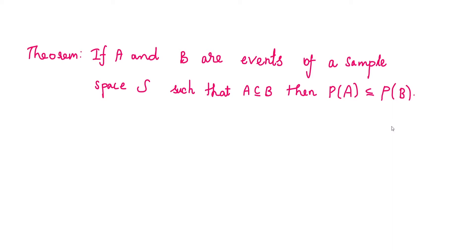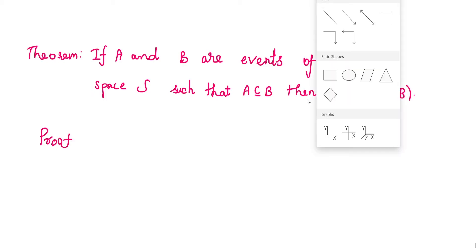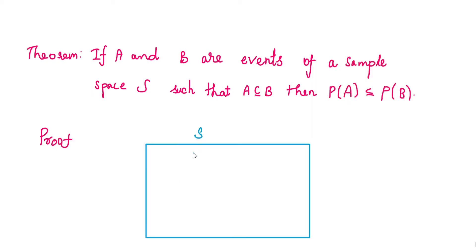So, A and B are two events of a sample space S, and A is contained in B. We need to prove that P of A is less than or equal to P of B. In this proof, we will take a diagram. The diagram is very helpful to us. This is the sample space S, and there are two events: A is one event and B is one event.